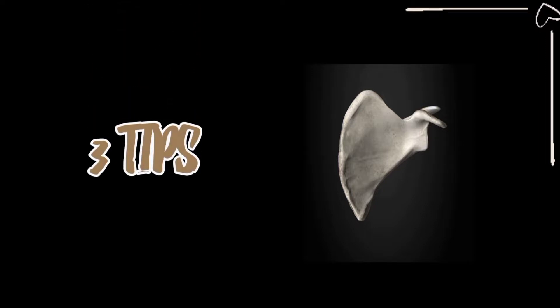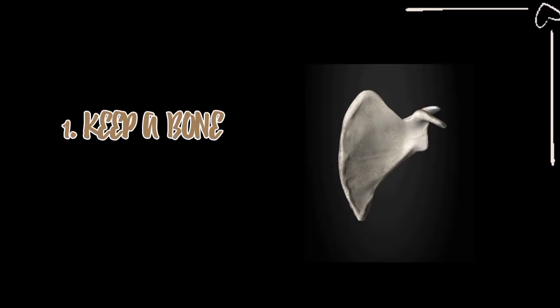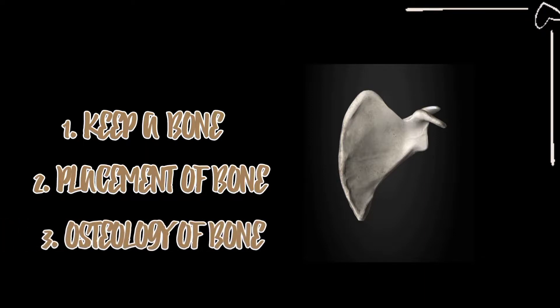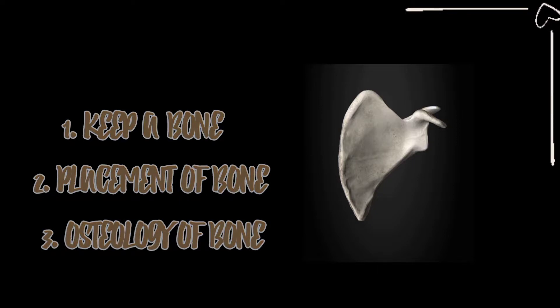Determining the side of any bone is a tricky thing, but with these three tips you can easily identify it. First, you should have the bone in hand so you can focus on its landmarks. Second, you should know how to place the bone on the right or left side, and what the anterior and posterior aspects are. Third, you should know the osteology of the bone so you can identify whether it belongs to the right or left side.